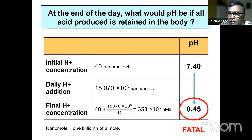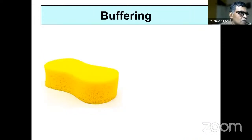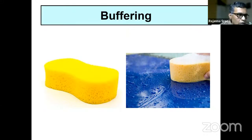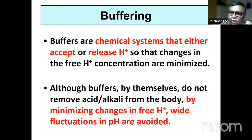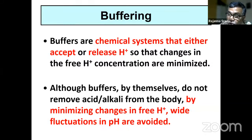Therefore, in the body there is constantly a process of buffering. Buffering is like a sponge — it takes water away from a surface, or when compressed, water comes out. Buffers are chemical systems that either accept or release hydrogen so that changes in free hydrogen ion concentration are minimized. Although buffers do not remove hydrogen or alkali from the body, by minimizing changes in free hydrogen ion concentration, wide fluctuations in pH are avoided, which is essential for normal cellular functions.